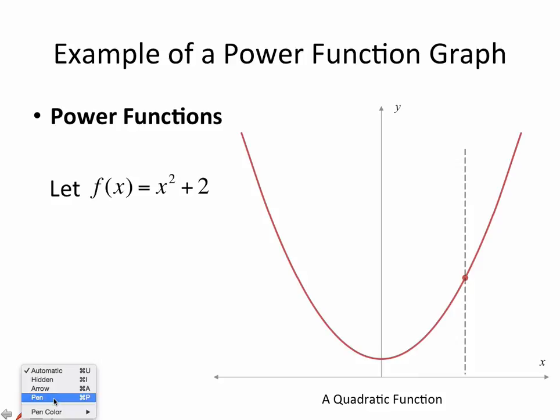Just to verify that what we've been doing so far are functions, we can also always try the vertical line test to see that it is a function. As you can see, it only intersects the graph at one point. Therefore, this is a function.